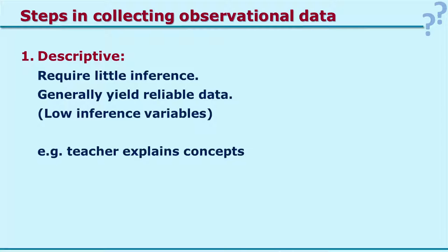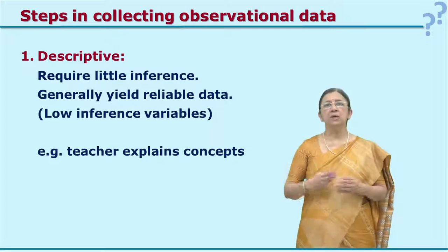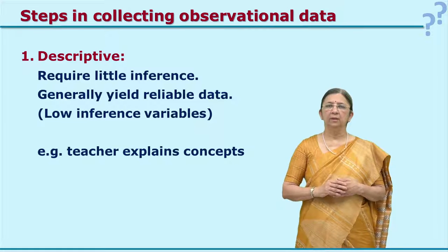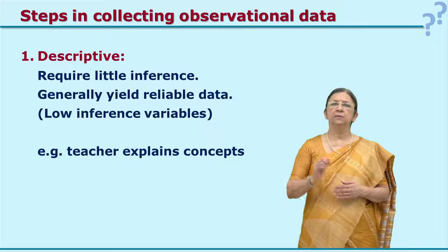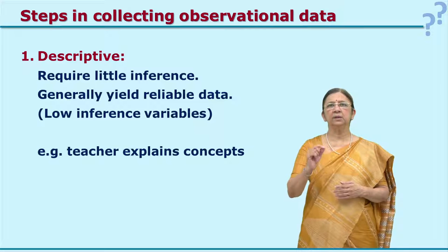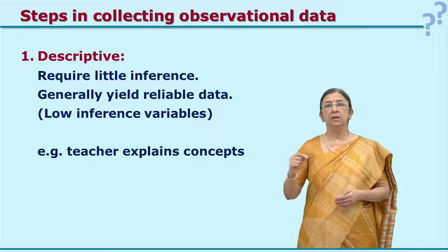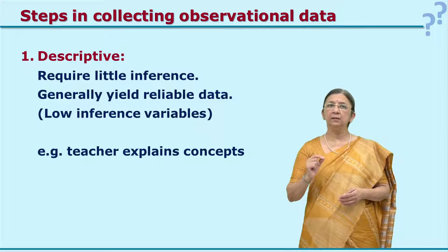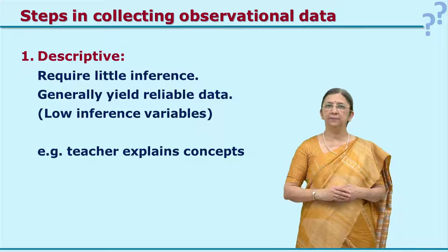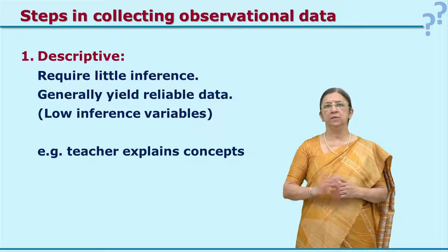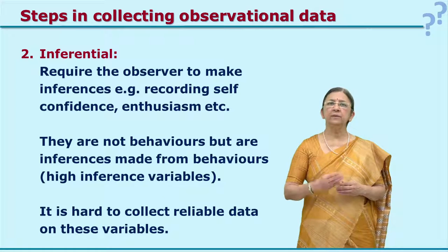The first step is defining observational variables. According to Borg and Gall, there are three types: descriptive, inferential, and evaluative. Descriptive is the lowest level—it requires little inference. You observe something and just note it is happening, such as whether the hand is raised or whether the teacher talks. For example, observing every 30 seconds and putting a tick whether the teacher is talking is descriptive variable.